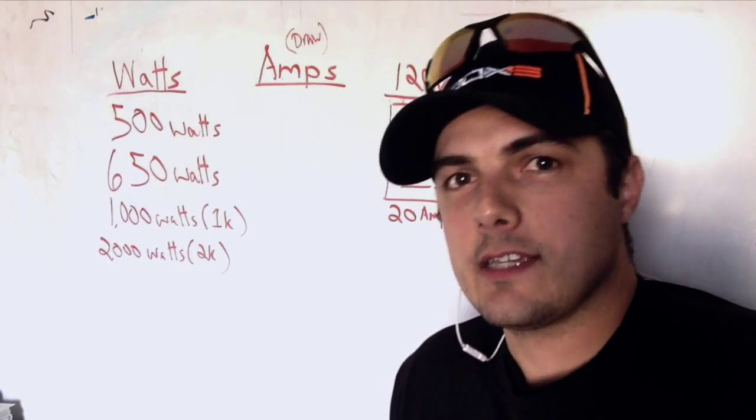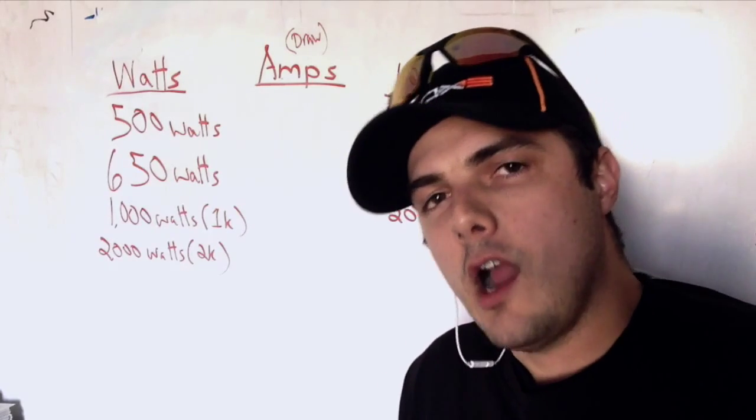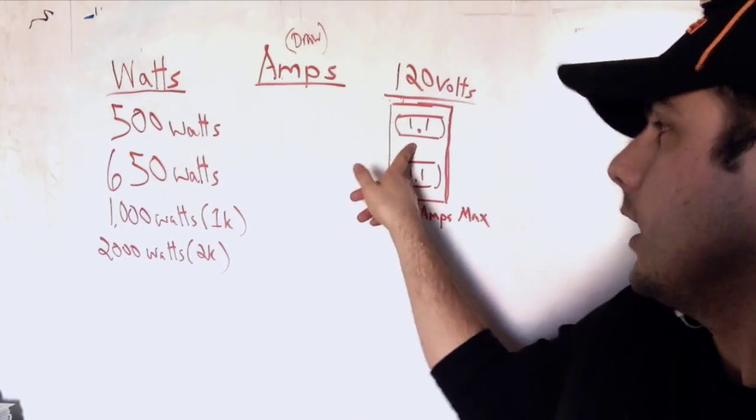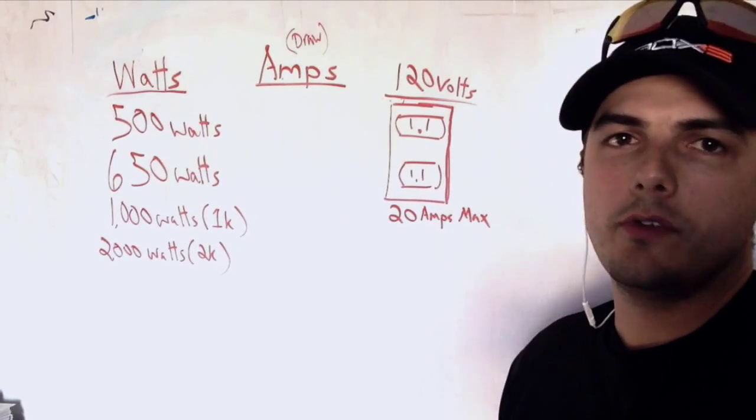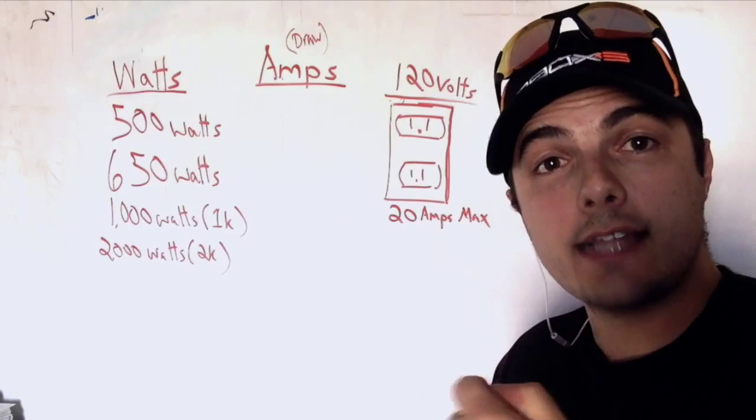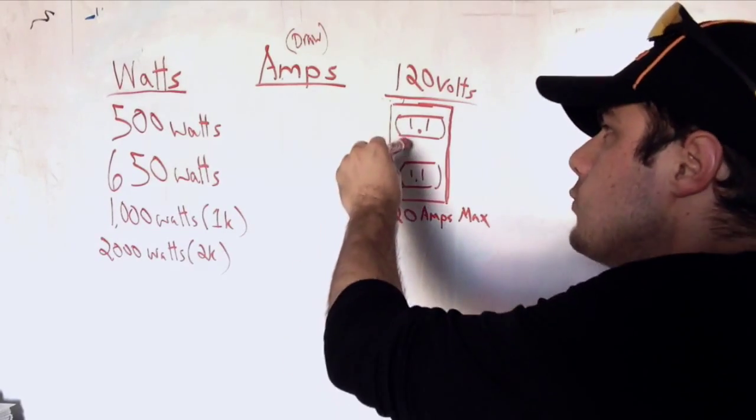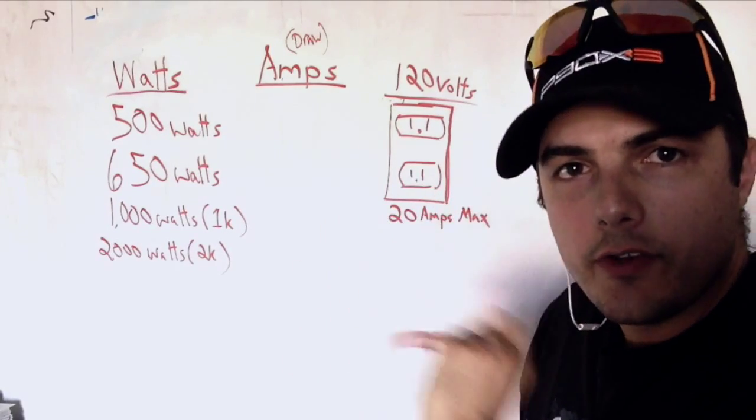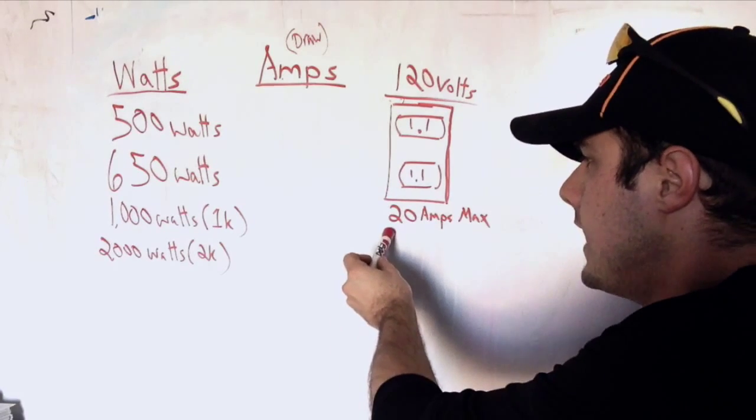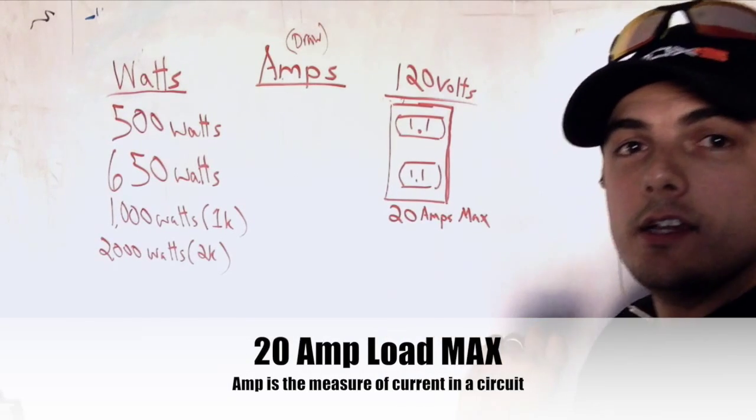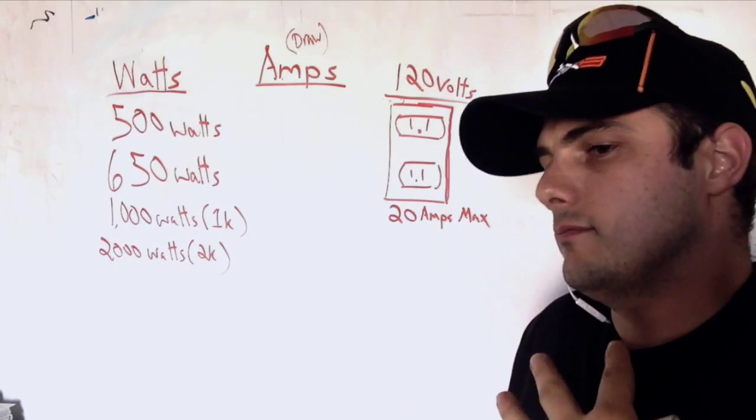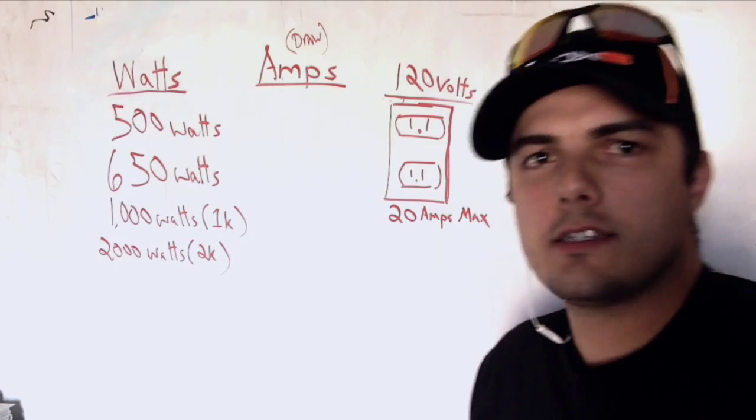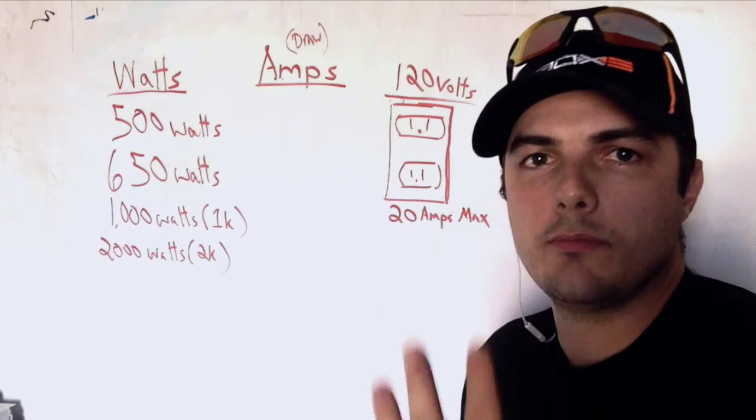When I say circuit, I'm talking about in our case basically a wall plug, just an Edison plug that we have on the wall at our apartment or the office or whatever that we're going to plug our lights into. Each one of these circuits can take a 20 amp draw max.